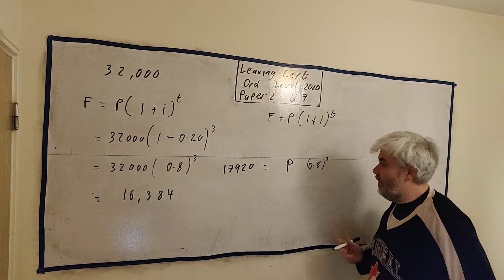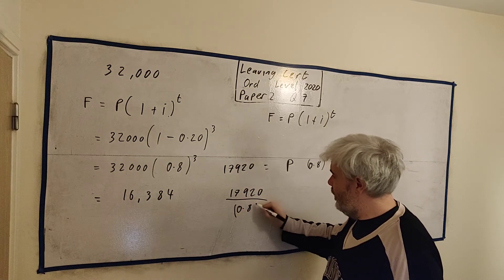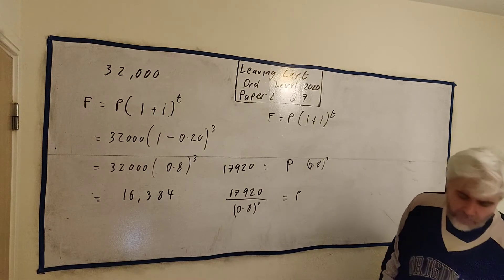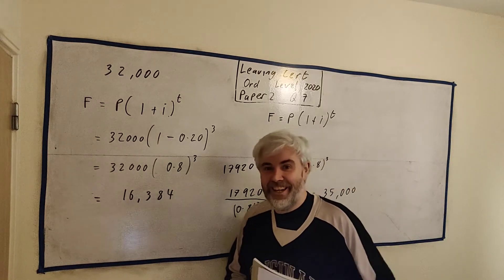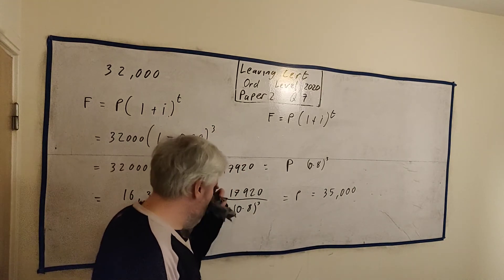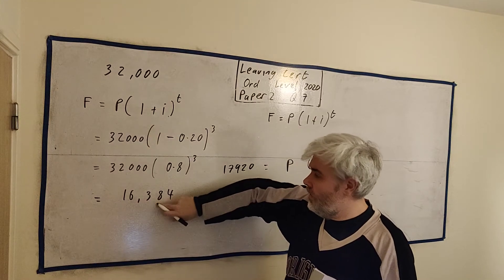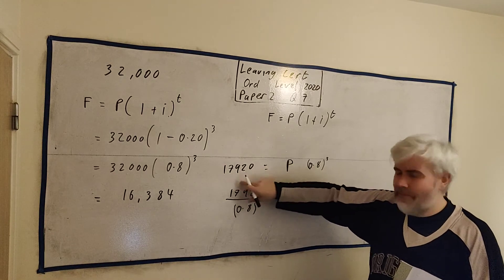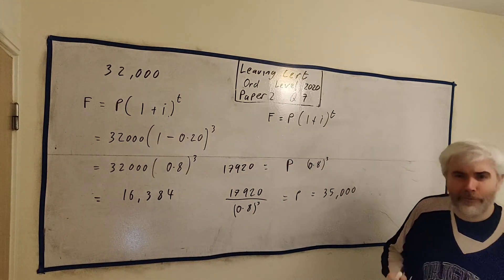F equals P times 1 plus i to the power of t. All the numbers are the same. If we start at the end though, and work backwards, they've given us a different number. So that's $17,920. And this line, 0.8 will still be there. It's just this number we don't know. Let's put that in as P. This is just a number. You can put it on a calculator. That's $17,920 divided by 0.8 to the power of 3. That's equal to the answer they're looking for. So you just put that into a calculator. It comes out as $35,000. Exactly $35,000. I like when I see numbers like that because it doesn't guarantee you're right but it's a good indication if you get a nice round number like that.